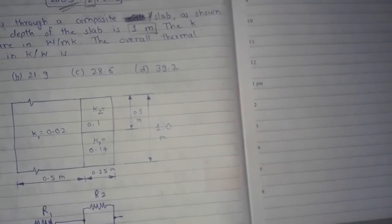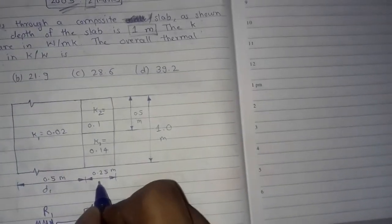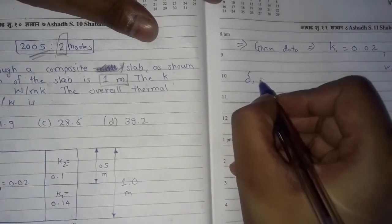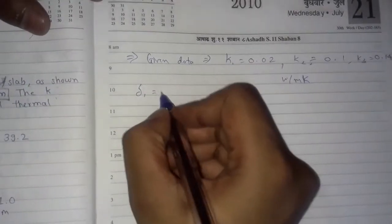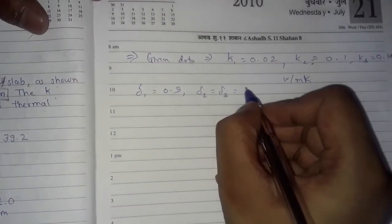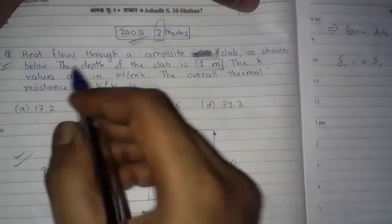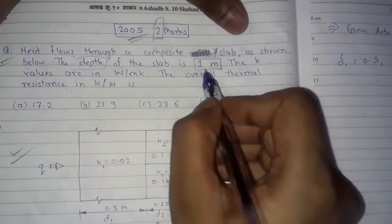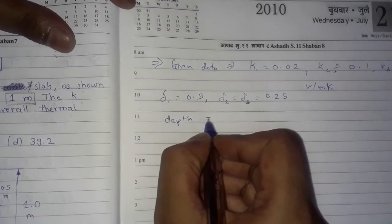We also have the thickness values: δ1, δ2, and δ3. From the diagram, δ1 is equal to 0.5 m, and δ2 is equal to δ3 is equal to 0.25 m. The depth of the slab, w, is equal to 1 meter.